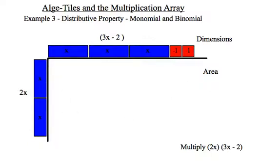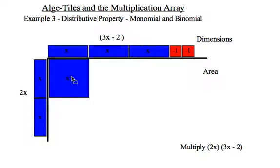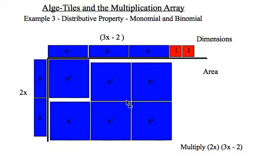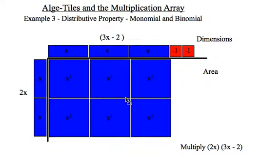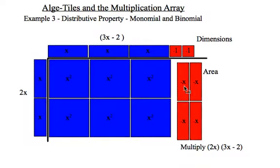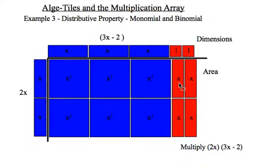x times x is positive x squared. Now you can see I'm going to repeat that same calculation five more times, so I'll just bring all of those tiles in at once. And lastly, x times negative 1 would be negative x. And again, I repeat that calculation several times. So the dimensions on the outside multiply together to get the area on the inside.